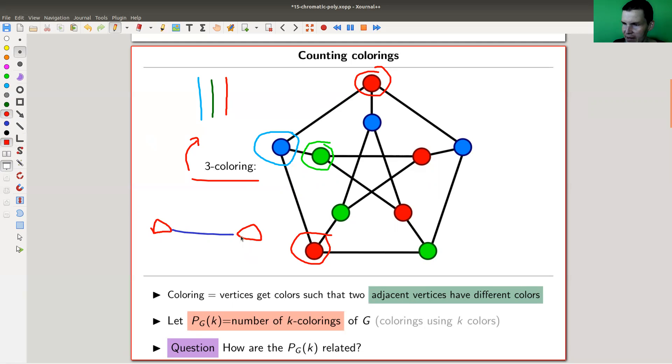because the one coloring would be both red, for example. And this can't work. So as soon as you have an edge, you can't have one coloring. There's two coloring, three colorings, four colorings. As soon as you have enough colors, namely at least the number of vertices, you always have colorings, because just every vertex gets its own color.